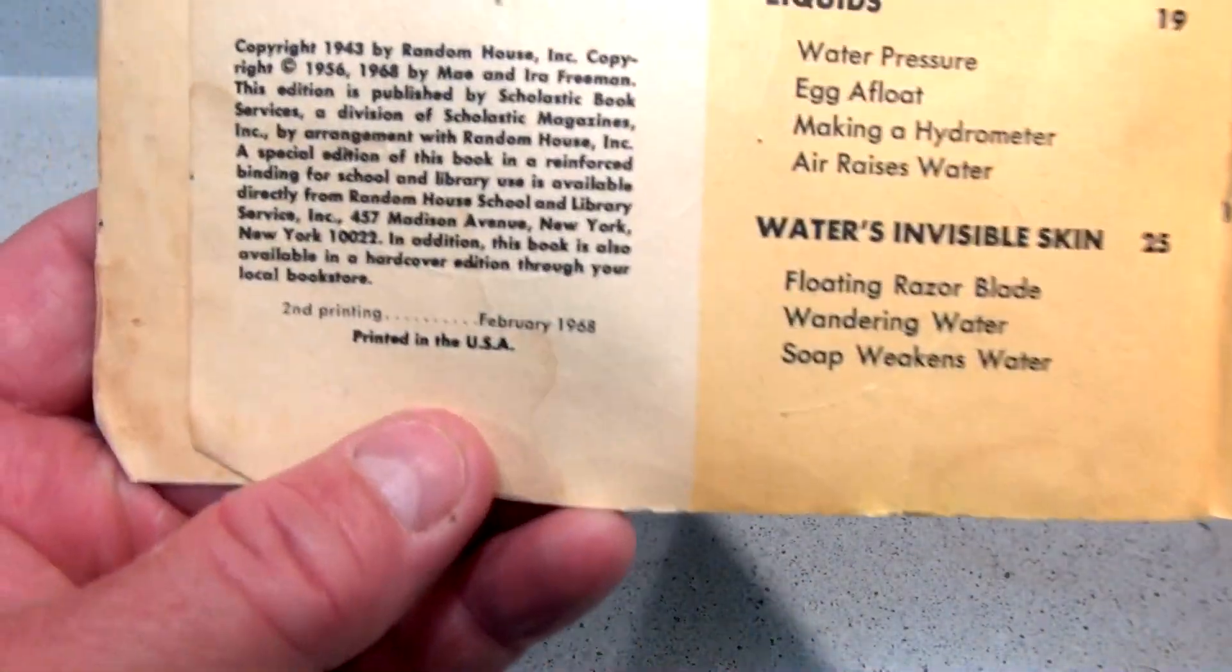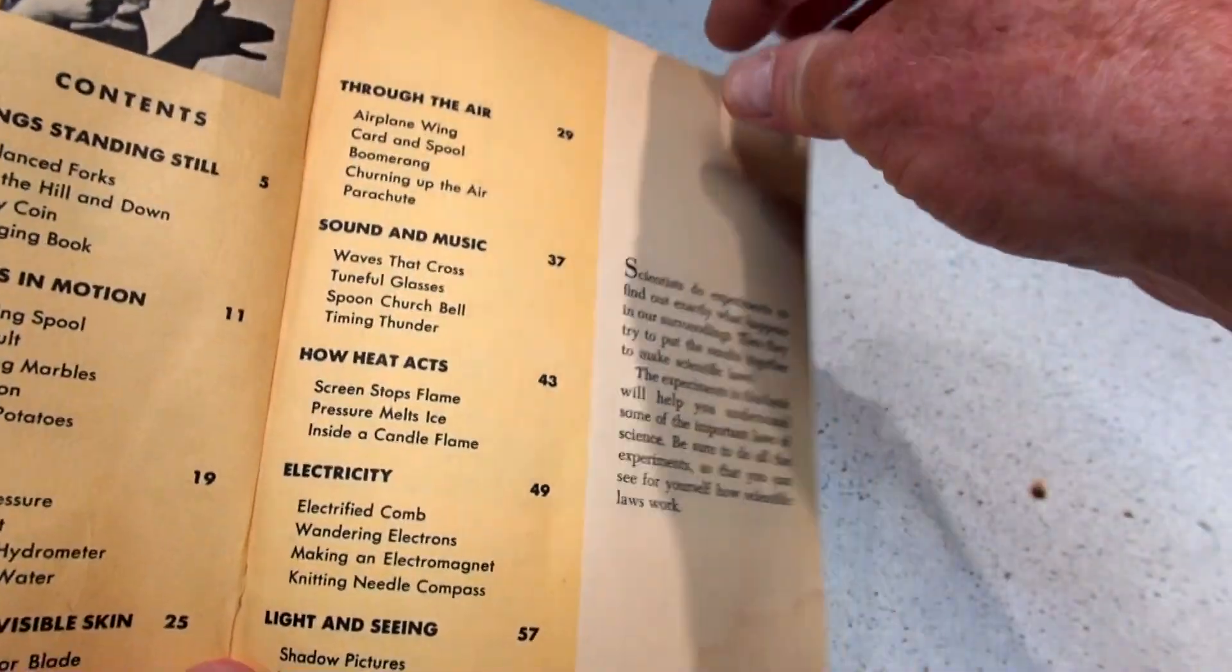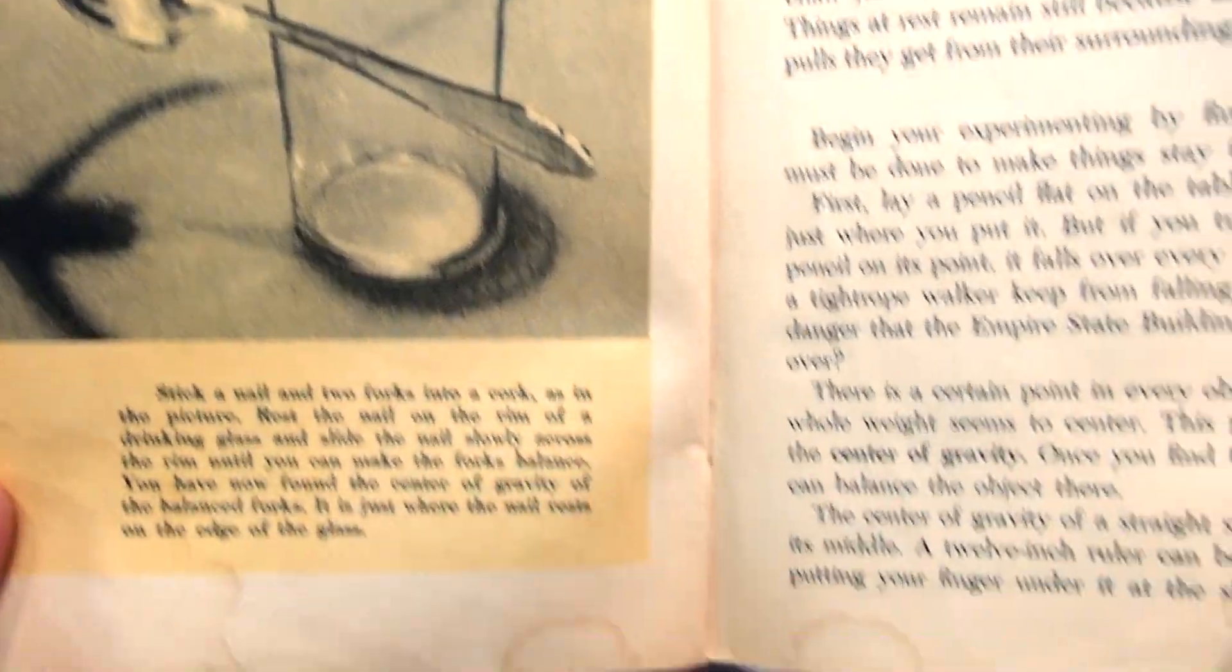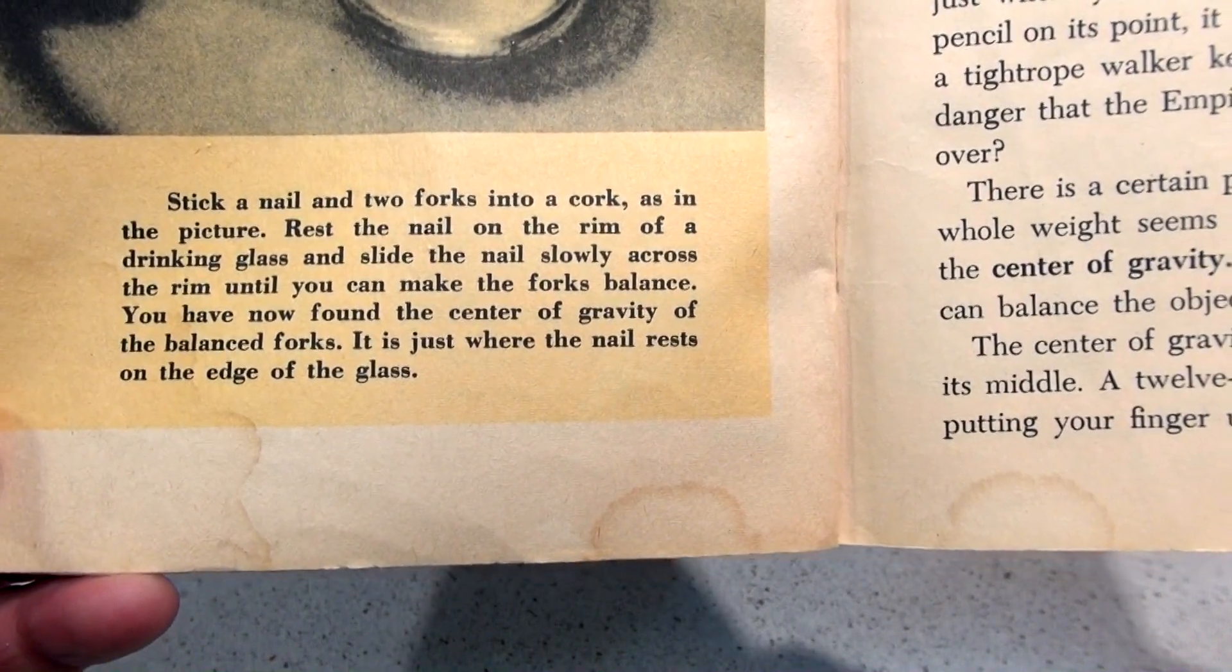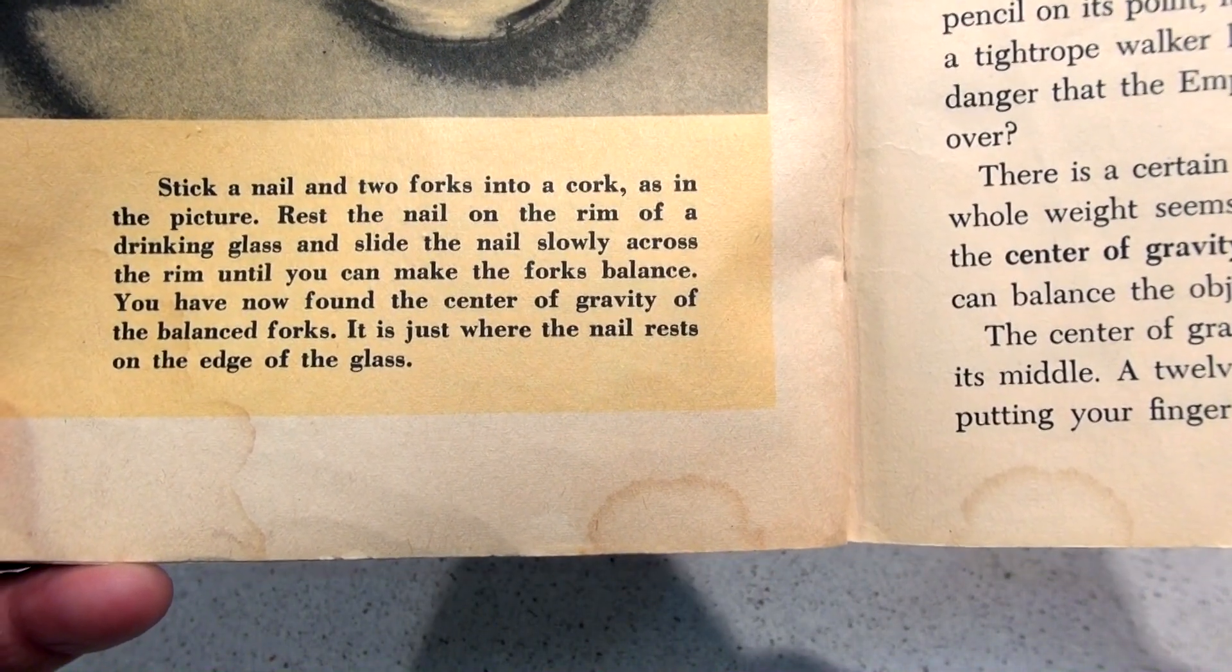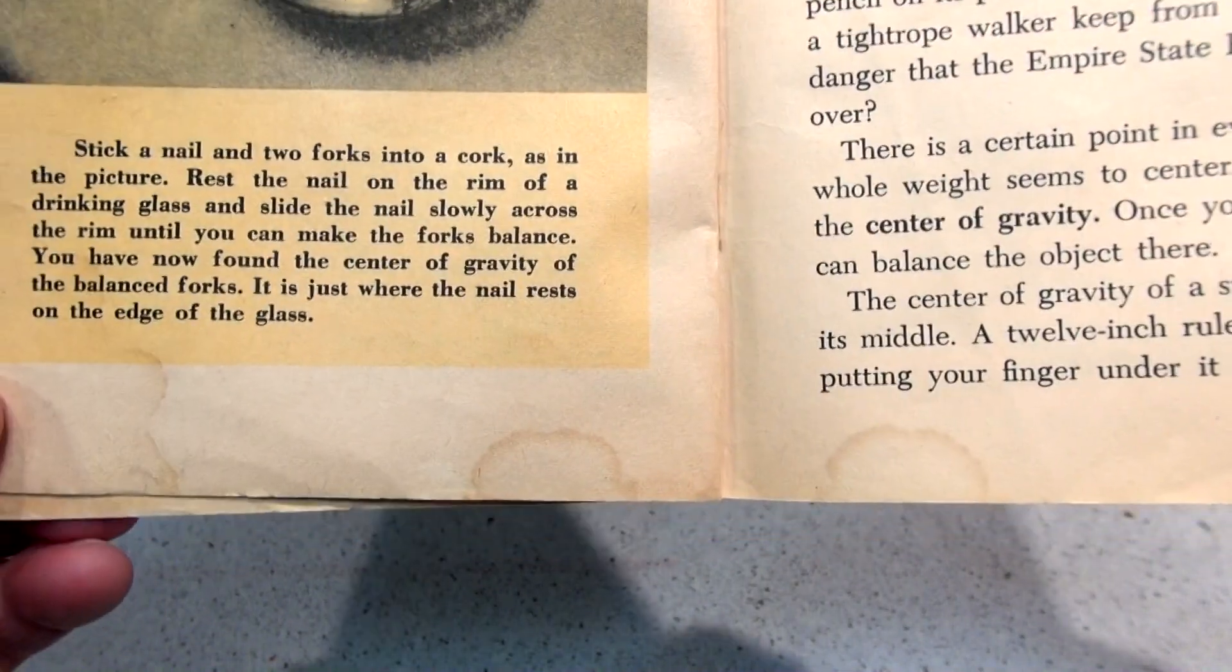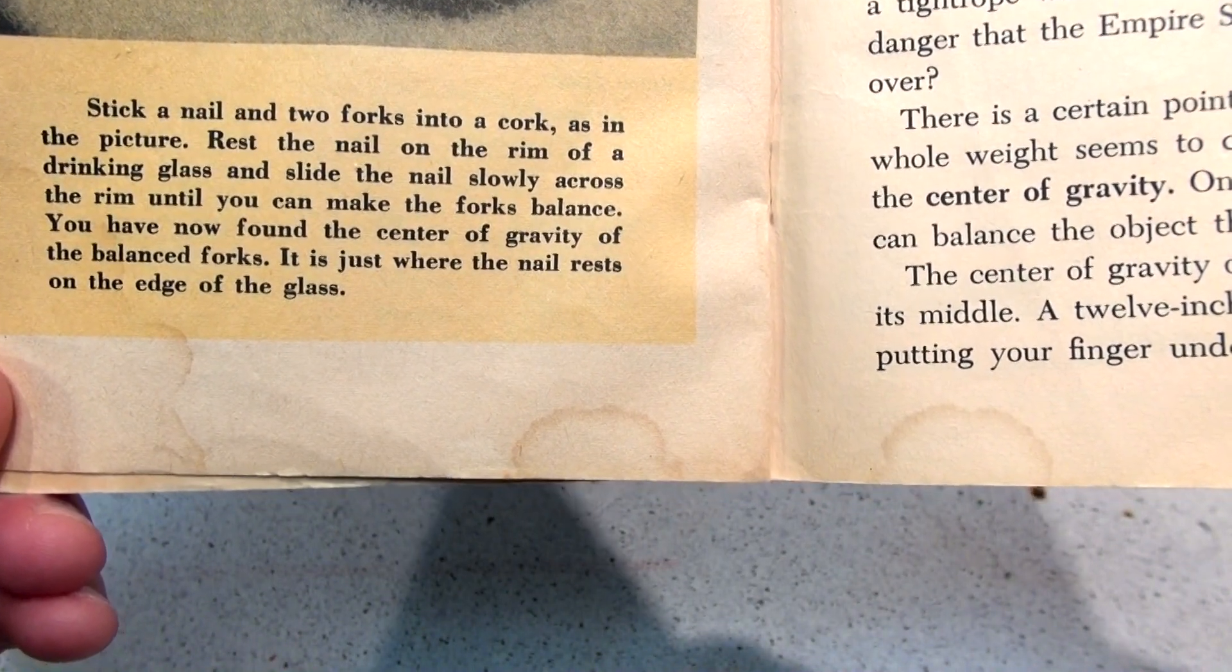So let's open up this book. This is an old science book. I looked at the date and it's around 1968 when it was in second printing. I turned to the first page and the first experiment is things standing still. It says stick a nail and two forks into a cork as in the picture. Rest the nail on the rim of the drinking glass and slide the nail slowly across the rim until you can make the forks balance.